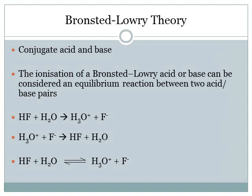In Bronsted-Lowry theory, an acid and base will react to form another acid and base. This second acid-base pair is called a conjugate acid and base. The ionization of a Bronsted-Lowry acid and base can be considered an equilibrium reaction between two acid-base pairs. If we have a look at this first example, where I have hydrofluoric acid, HF, and water goes on to produce our hydronium ion and our fluoride ion.